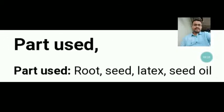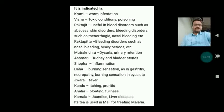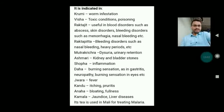Parts used are root, seed, latex, and seed oil. It is indicated in Krimi (worm infestation), Visha (toxic conditions and poisoning), Rakta disorders such as abscesses and skin disorders, bleeding disorders such as menorrhagia and nasal bleeding, Rakta Pitta (bleeding disorders including nasal bleeding and heavy periods), Mutrakricchra (dysuria and urinary retention), Ashmari (kidney and bladder stones), Shopha (inflammation), Daha (burning sensation as in gastritis and neuropathy), burning sensation in the eyes, Jwara (fever), Kandu (itching and pruritus), Anaha (bloating and fullness), and Kamala (jaundice and liver disease). It is mainly used for malaria in Mali.